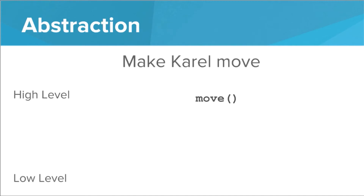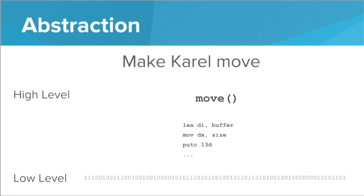Let's look at the levels of abstraction in a Karel program. Let's say we wanted to make Karel move. Well at a high level we could just say move — done, we've written our Karel program. But a lot's going on behind the scenes. That move command is actually getting translated into a language called assembly that the computer understands. We don't want to be writing our programs in assembly — that's very low level. But we can go even lower: each of those assembly commands is translated into machine code that's only zeros and ones. Each command has a sequence of ones and zeros, and that's what the computer actually understands. It's crunching those numbers to make everything on your screen happen.